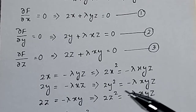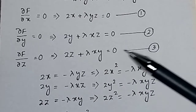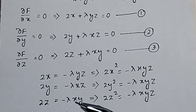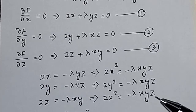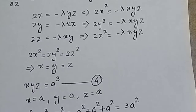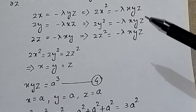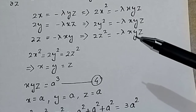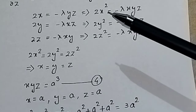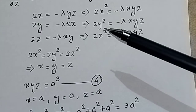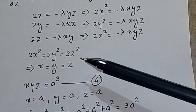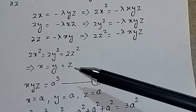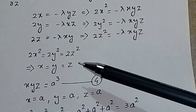Similarly, from equation 3, 2z = −λxy, so multiplying both sides by z gives 2z² = −λxyz. Since the right-hand sides of all three equations are equal, we can write 2x² = 2y² = 2z², which means x = y = z.